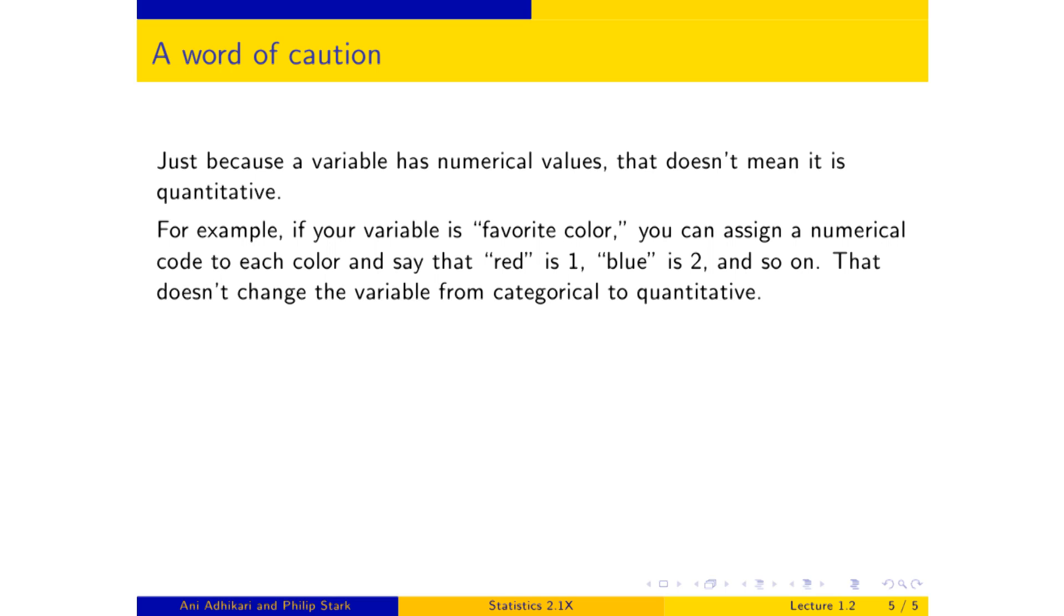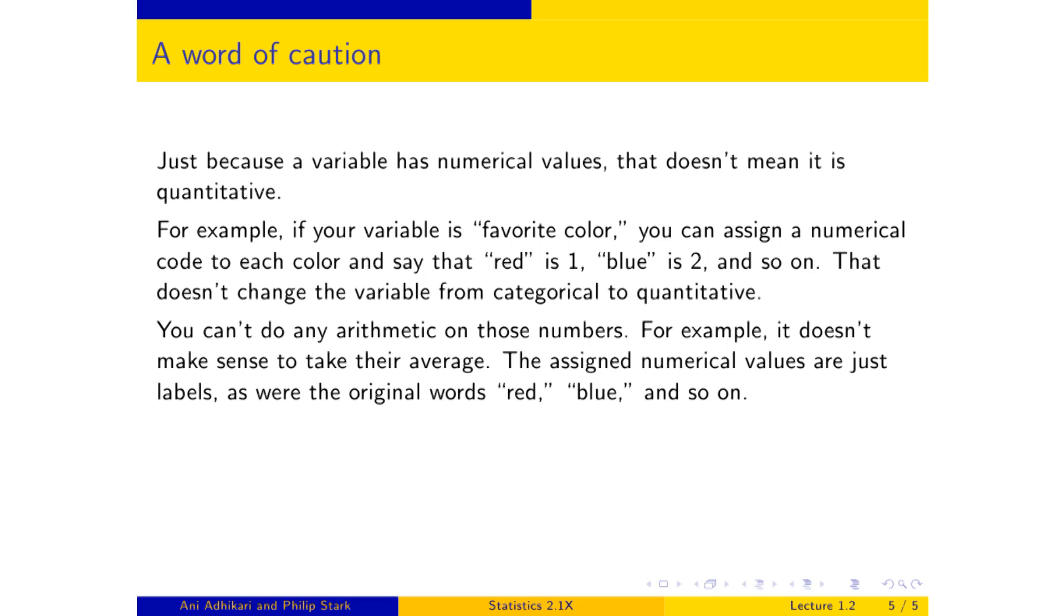And the reason is really that you can't do arithmetic with the numbers that you have assigned. For example, you've said blue is two and red is one, and certainly two minus one is one. But blue minus red equals red doesn't make any sense whatsoever. Taking the average of those ones and twos and so on does not make any sense. So the numbers that you have assigned are just labels, just as the old words, the red, the blue, and so on were labels. That's all they are.